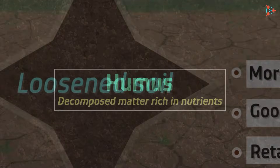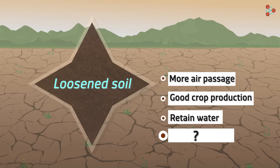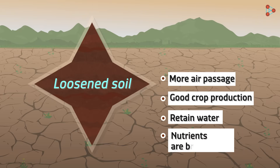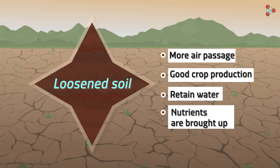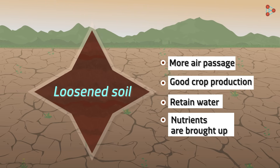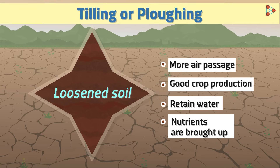Loosening up the soil has yet another benefit. Plants mostly take nutrients from the top layers of soil and are unable to go deeper. Loosening the soil helps to turn the lower soil, making it accessible to the plant, and brings nutrients from the lower layers up to the upper layers. This process of loosening and turning of soil is called tilling or ploughing in agriculture.